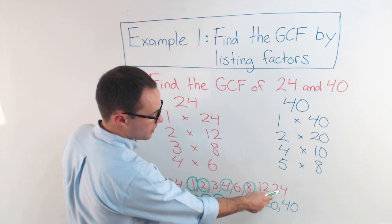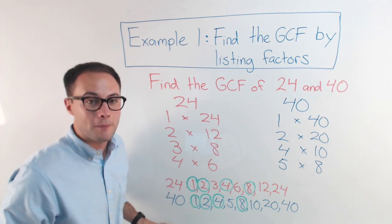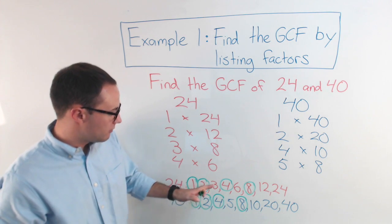10, no. 12, no. 20, 24, 40. So those are all my common factors. 1, 2, 4, and 8.